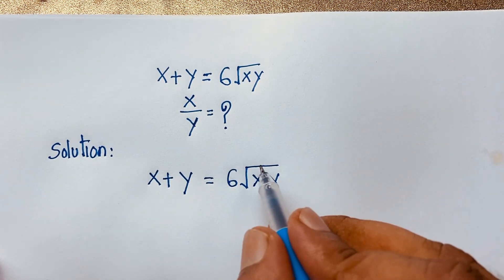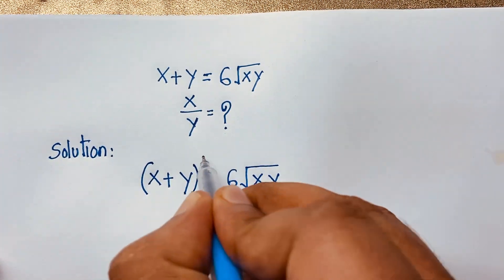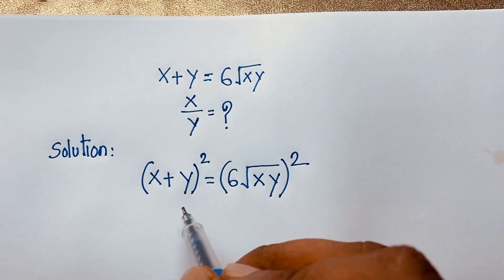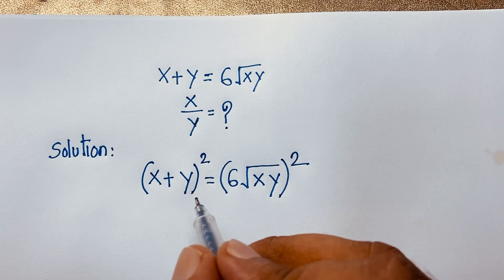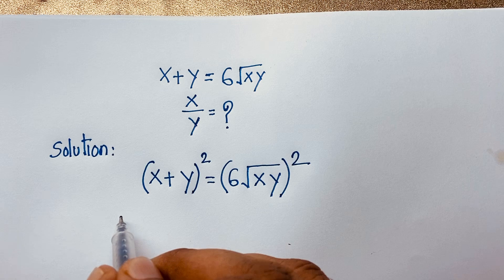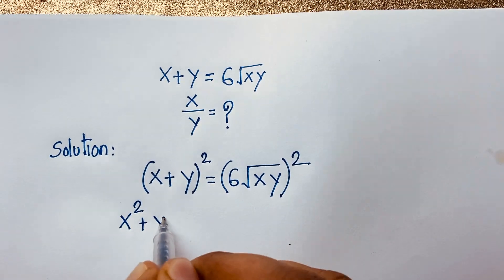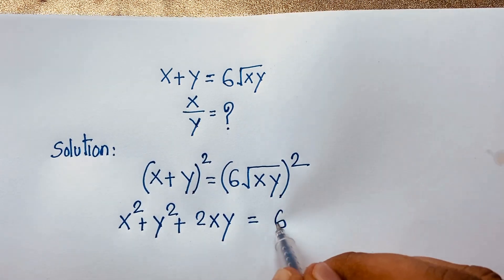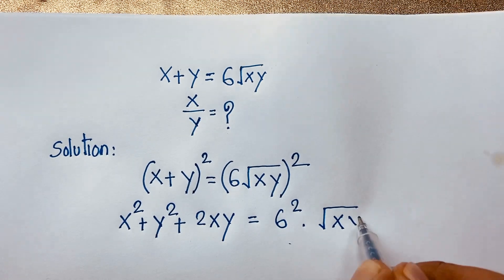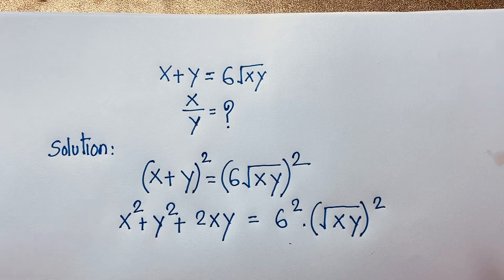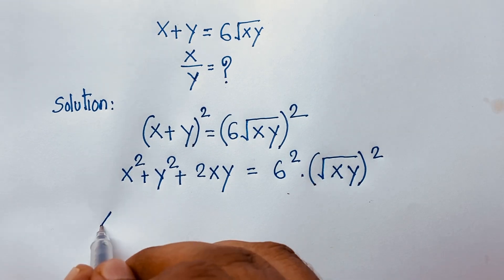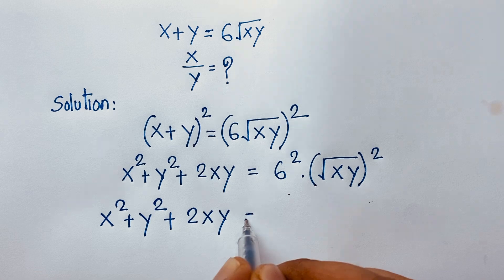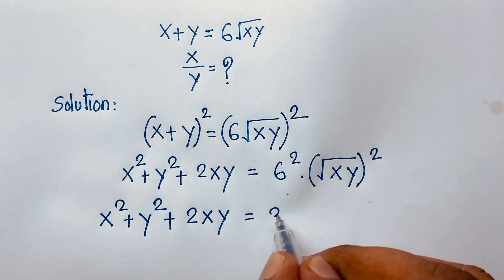To eliminate the square root, I square both sides. Using the identity (a + b)² = a² + 2ab + b², we expand the left side to get x² + y² + 2xy. On the right side, 6 squared gives 36, and the square root is cancelled, giving 36xy.